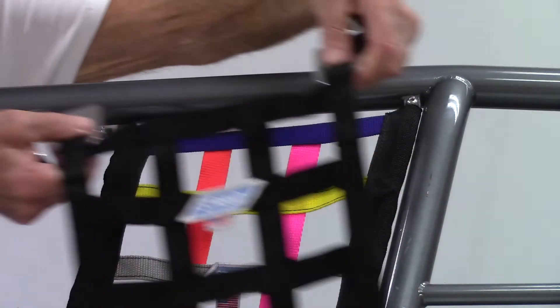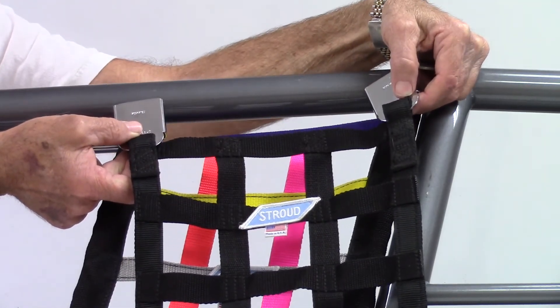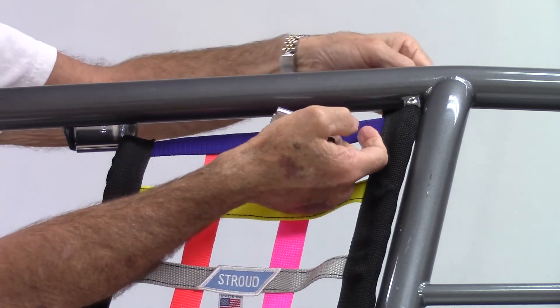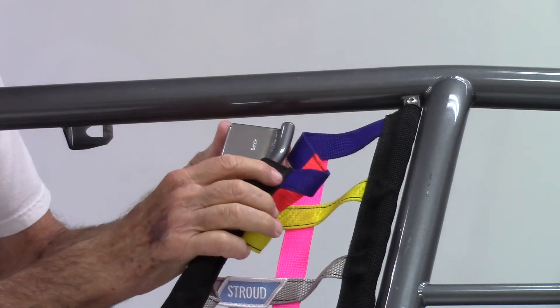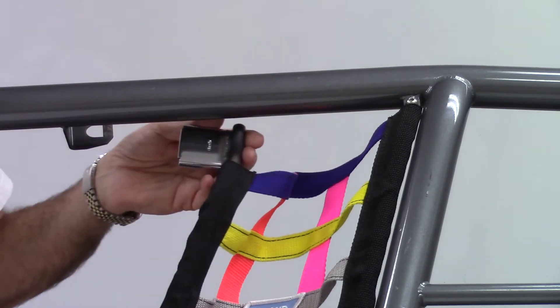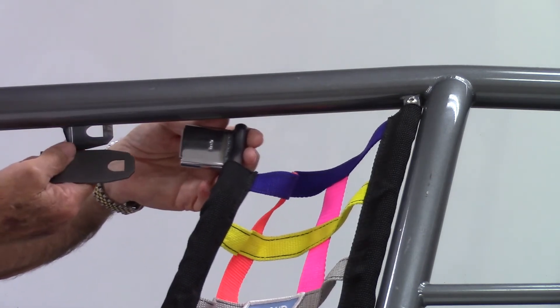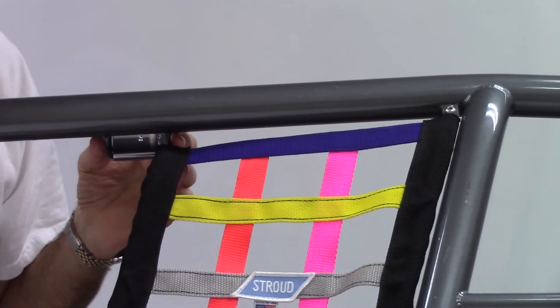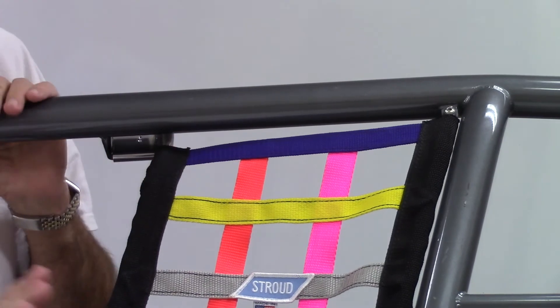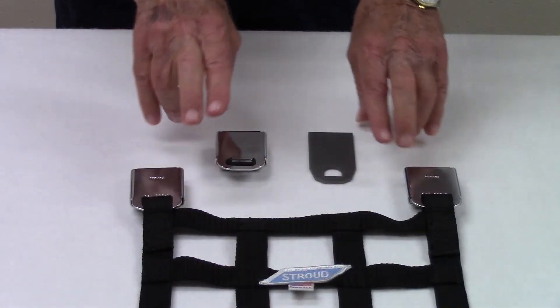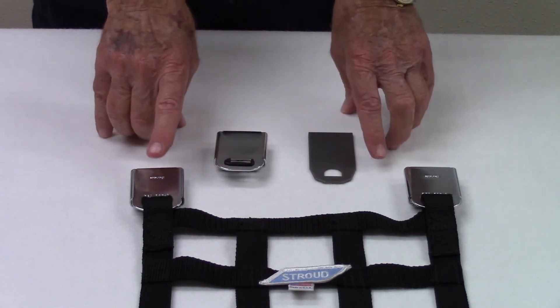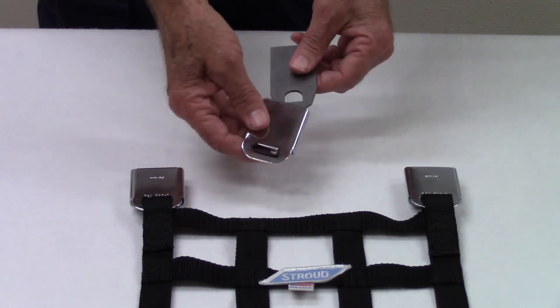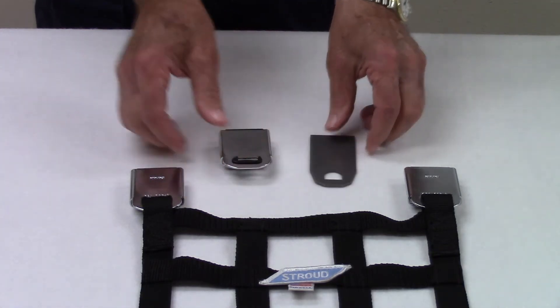Most window net applications release via two buckles at the top of the net. The buckle is attached to tabs welded to the inside of the top tube of the cage. As shown in this example, the buckle is welded to the forward vertical rod and attaches horizontally to the tab on the top tube of the cage. There are many correct ways to mount and release a window net. We just need to know the method you are using. Stroud's net release device consists of an SFI approved buckle and an insert weld tab. This tab can be shaped or trimmed to match the weld point on the cage for your application.